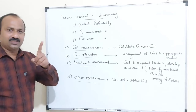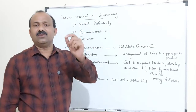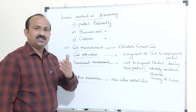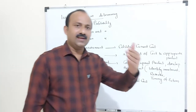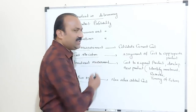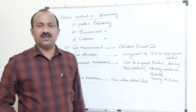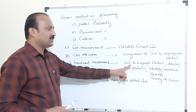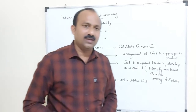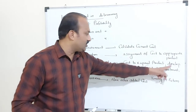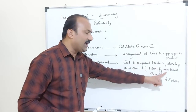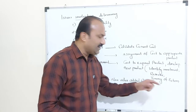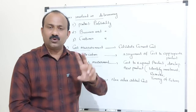Cost measurement requires calculating the correct cost of the organization; otherwise it will create over-costing, which leads to losses. Cost allocation involves direct and indirect costs — identifiable and non-identifiable — and you must correctly assign costs to the appropriate product, otherwise the pricing will be wrong. For investment measurement, you need to calculate the cost required for expansion of a product or development of a new product, identifying how much investment is required, what resources are needed, and what is the timing of return on that investment.